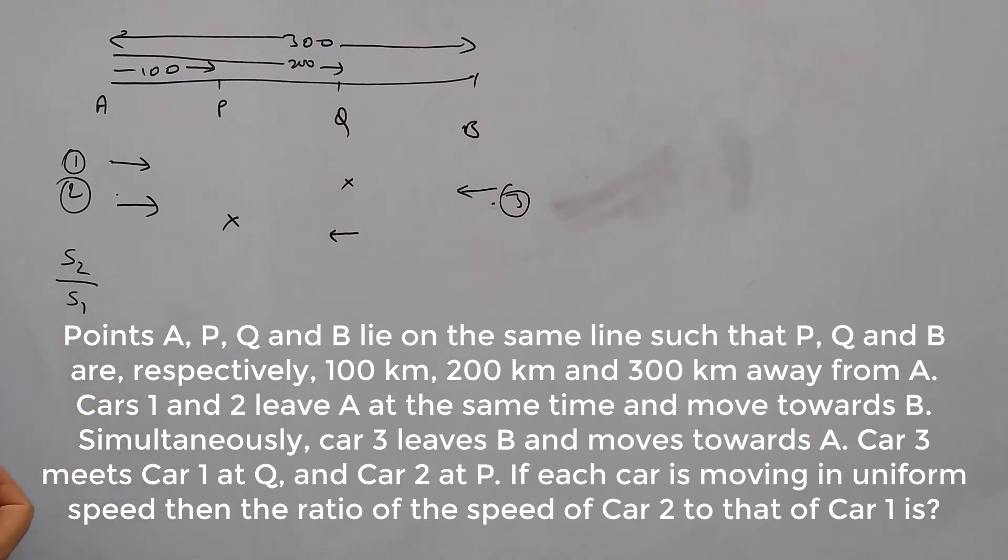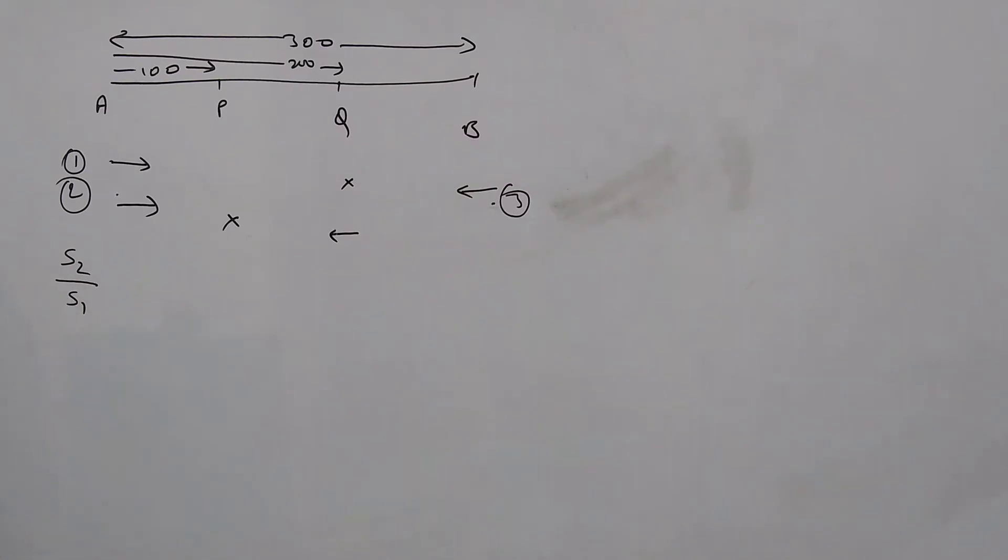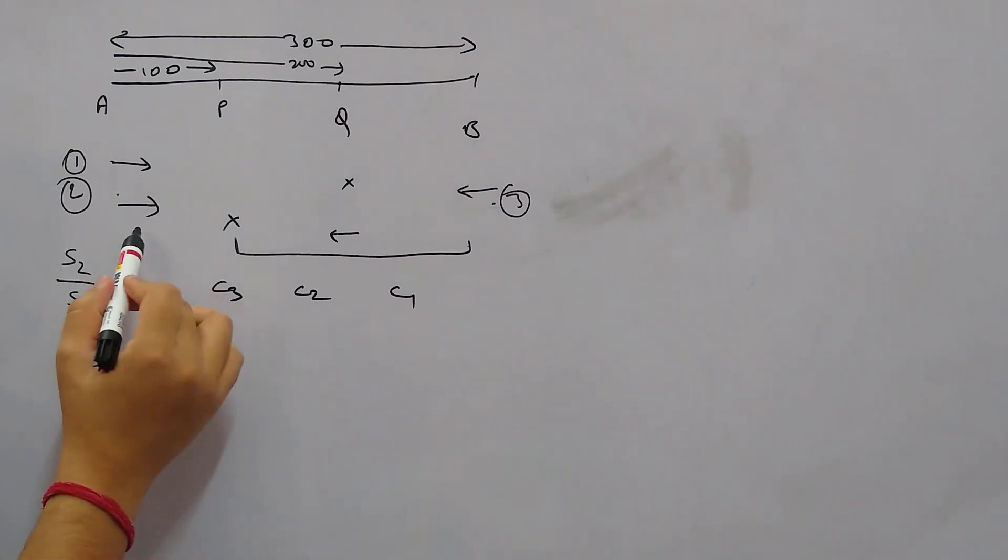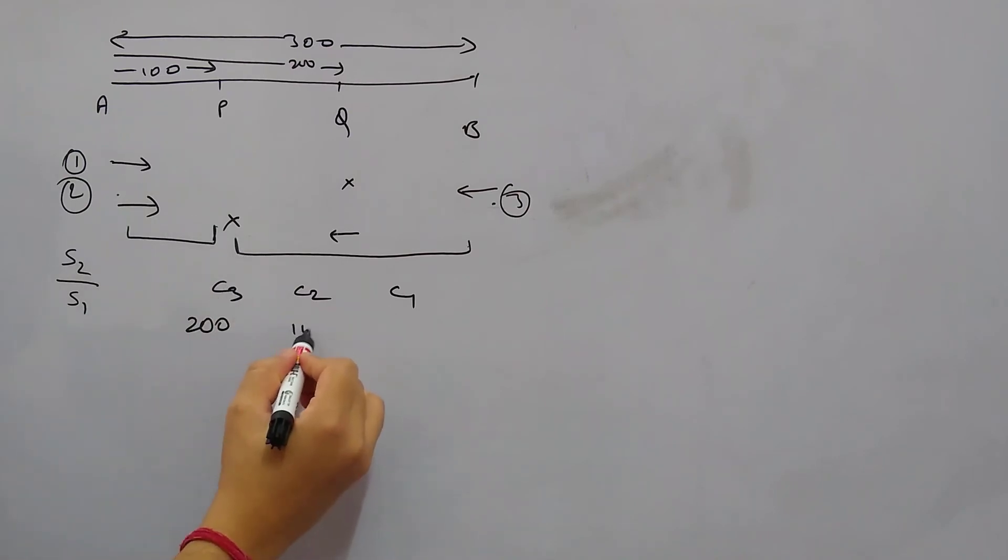Let's see what is happening here. We have three cars: c3, c2 and c1. By the time c3 is covering 200 kilometers, this is 200 kilometers PB, so by the time c3 is covering 200 kilometers, c2 is covering 100 kilometers because c2 has reached P from A, so c2 has covered just 100 kilometers.